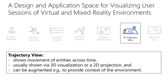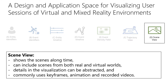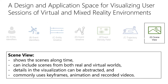The trajectory view category includes visualizations that show movement of entities across time, usually shown via 3D visualization or a 2D projection of movements. The visualizations can also be augmented to provide context of the environment. The final category, scene view, includes visualizations that show scenes of the session along time. It can include scenes from both real and virtual worlds. The details in the visualization can be abstracted depending on the data analysis task. Common techniques include using multiple images as keyframes, animations, and recorded videos.